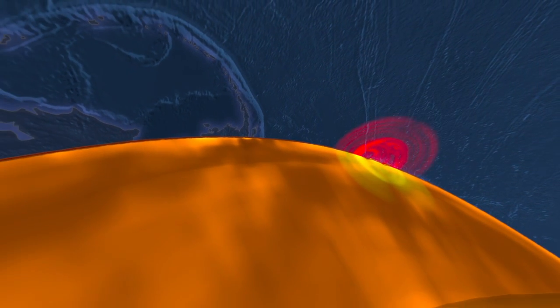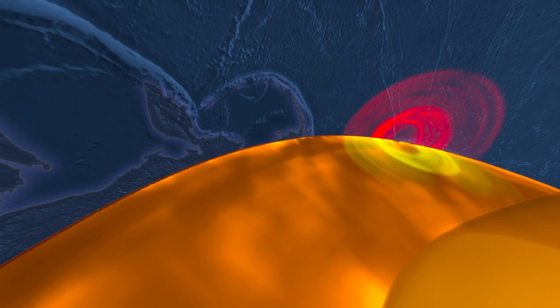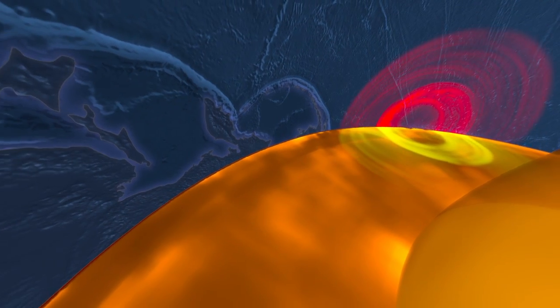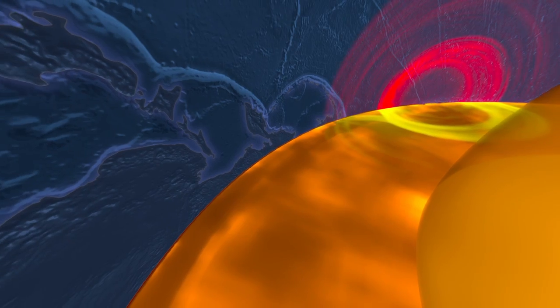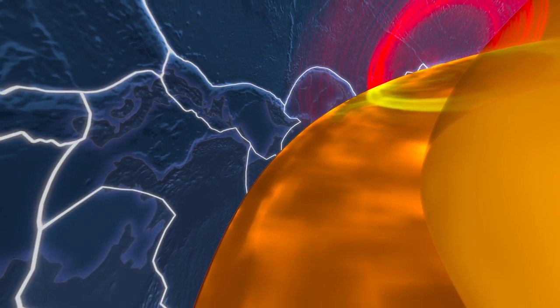Seismic waves allow scientists to study what lies beneath Earth's thin crust. Its rocky mantle surrounds a superheated metal core. Activity in the mantle drives the motion of tectonic plates above.